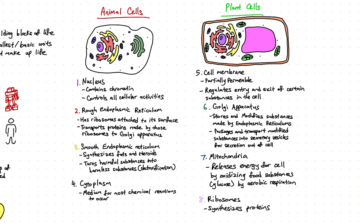The cell membrane, which is a phospholipid bilayer, is partially permeable. It helps to regulate the entry and exit of certain substances in and out of the cell.